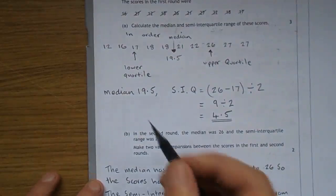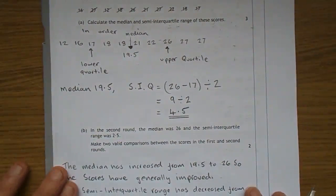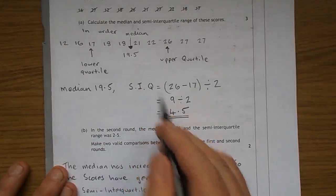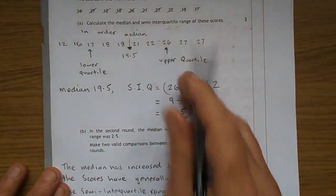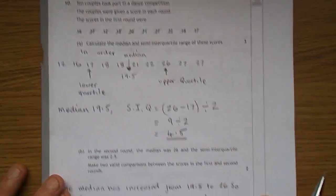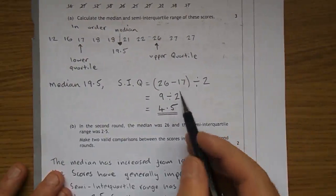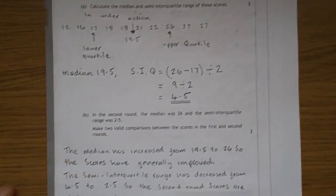So reiterating, the median is 19.5. SIQ, semi-interquartile range, is the interquartile range—that's 26 take away 17. Semi, as its name implies, means you halve it, divide by two. 26 take 17 is 9, divide by two: 4.5.